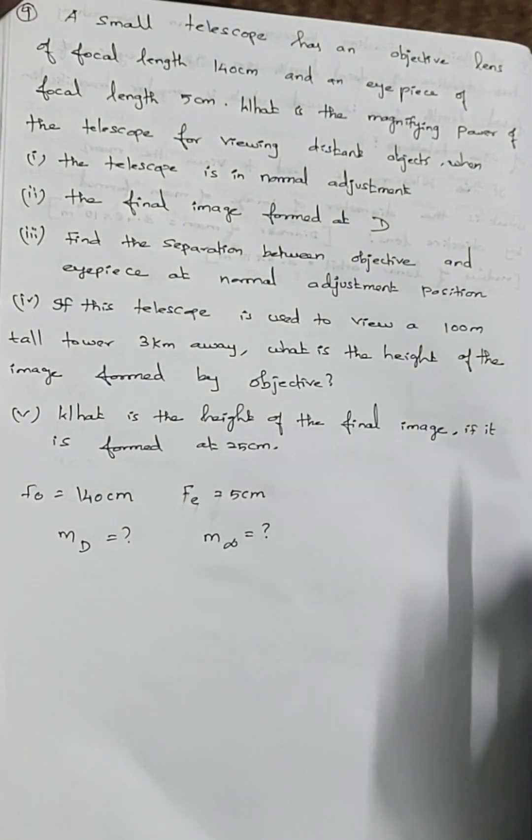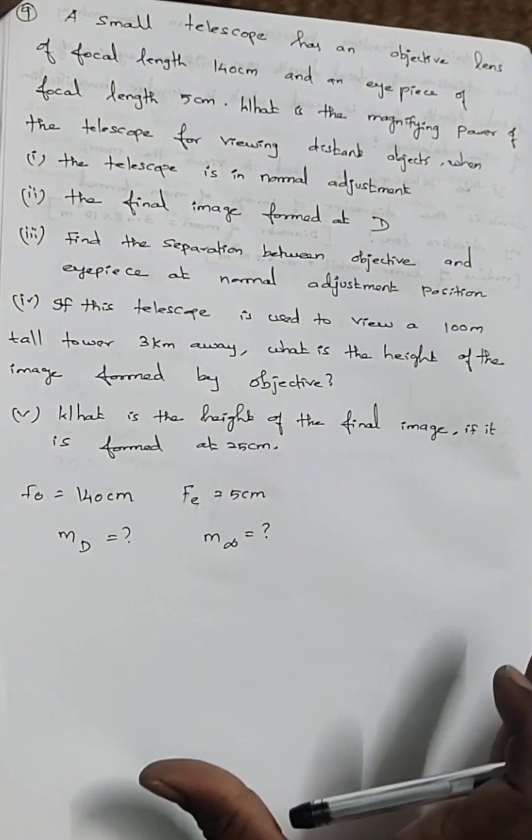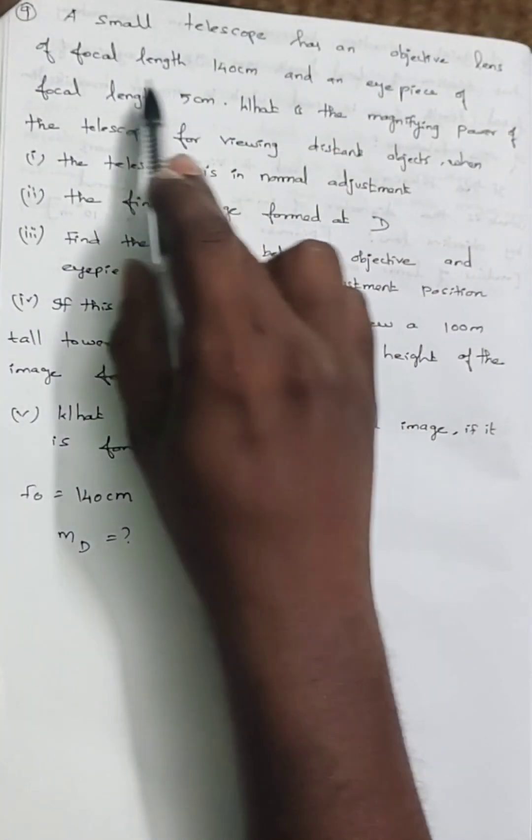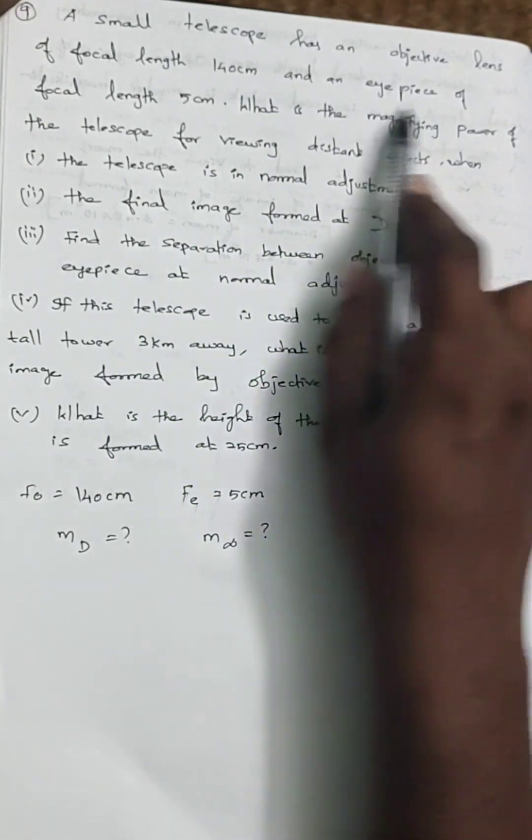Alright, question number 9. It's a very long question but solving this will be easy. A small telescope with an objective lens of focal length 140 centimeter and eyepiece of 5 centimeter.